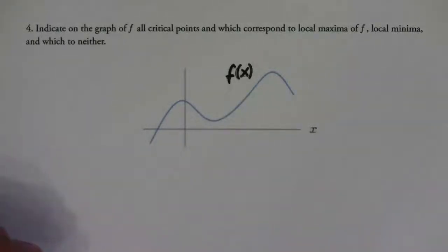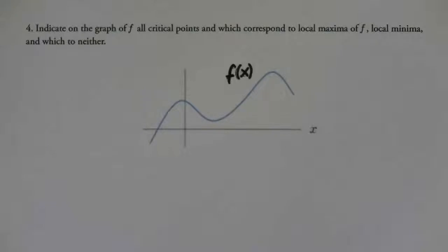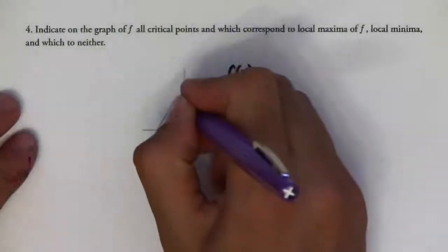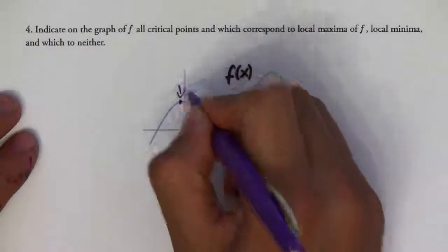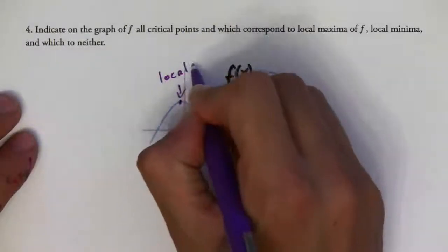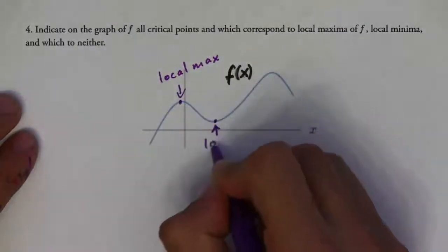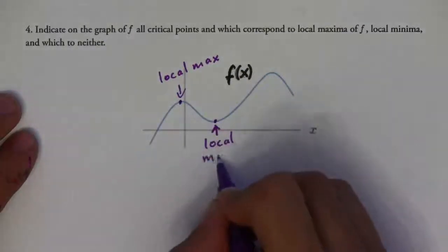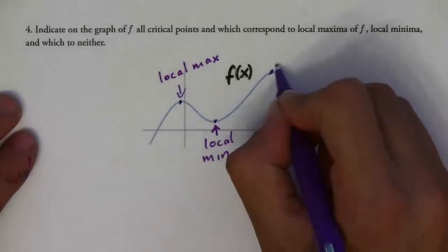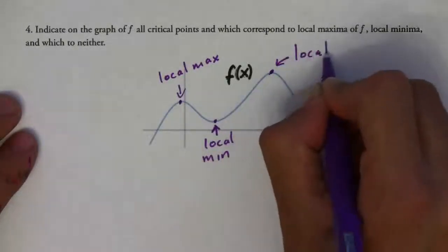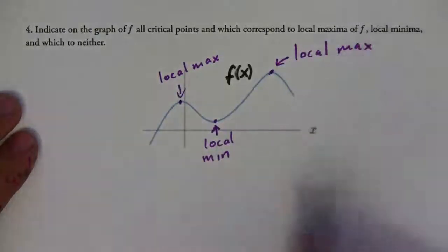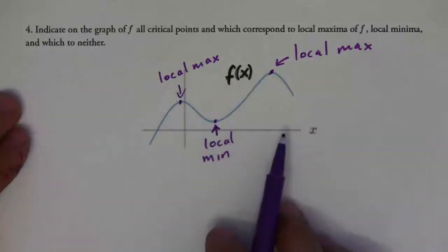For the original function, finding the critical points and the local maximums and minimums is very straightforward. This would be a local maximum. This one is a local minimum. And this is a local maximum. All three of these are also critical points.